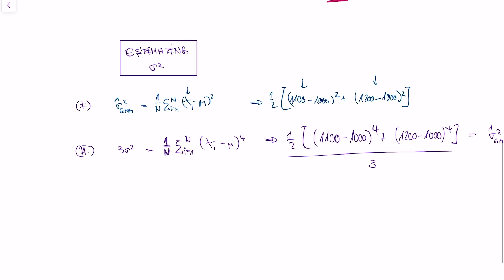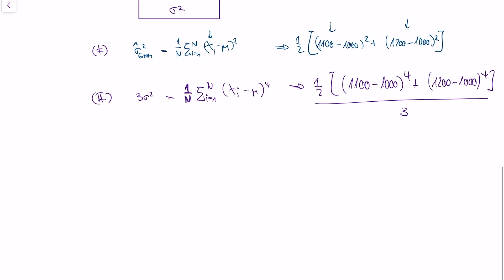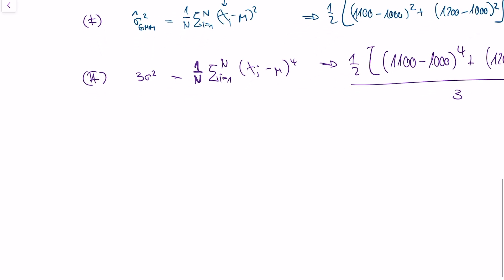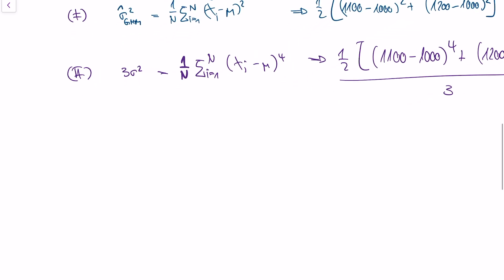So now comes the question, which method of moment estimator is better? Well, both are valid. And you can't really say that one is better than the other. But here comes the idea of the generalized method of moments. The idea is to combine both equations. So let's say, we have those two equations, which pin down sigma or the variance, let's use them both, because we can use more information using that. So how would we do that?